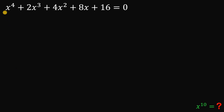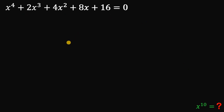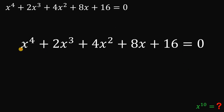So, given this equation: x to the fourth power plus 2x cubed plus 4x squared plus 8x plus 16 equals 0, our goal is to find the numerical value of x raised to the power of 10.